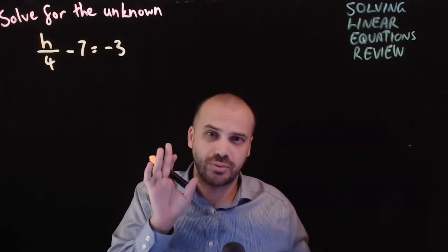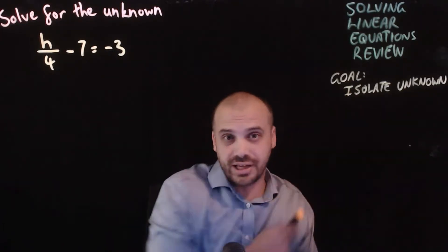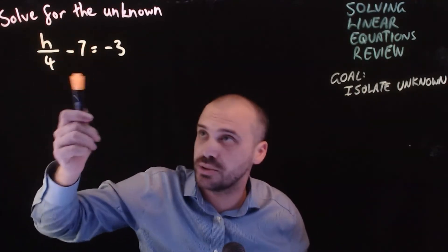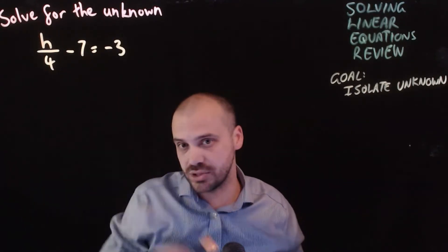But before I do, a couple of little things that I want to tell you. The first is to keep the goal in mind. You're trying to isolate the unknown. h has a 4 next to it and a 7 next to it. We want to get rid of those 4s and 7s and get h all by itself on one side of the equation.